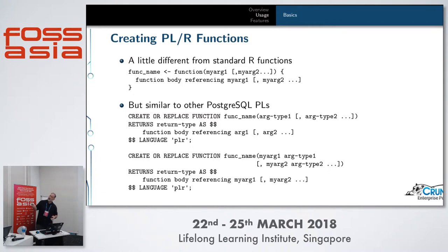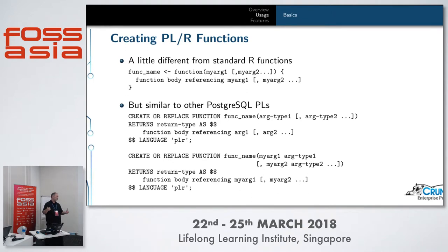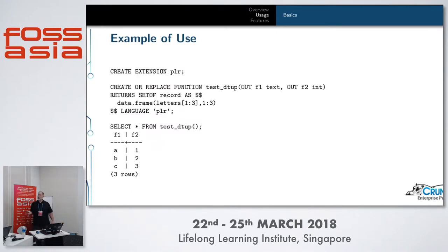This is what it looks like to create a function in R: you assign to a function name the keyword function with arguments and a function body. In Postgres, using the familiar create-or-replace function syntax with a name, argument types or named arguments, the function body is exactly the same as the R function body. The first thing you need to do is make sure the binaries are installed on the OS — PLR packages are available from Debian, and RPMs from the Postgres Development Group YUM repository.